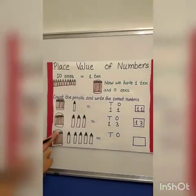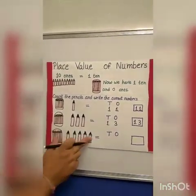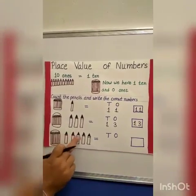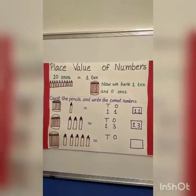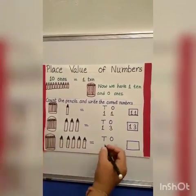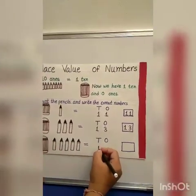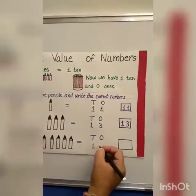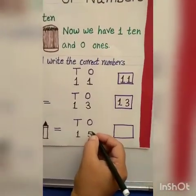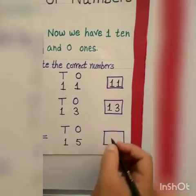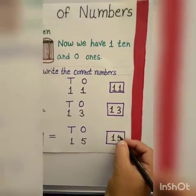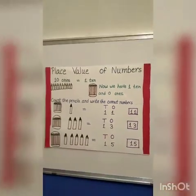Now next again 1 ten. And how many pencils are extra? 1, 2, 3, 4, 5. 10 plus 5 is 15. So here we have to write 1 on the tens place and 5 under the ones place. It's 15.